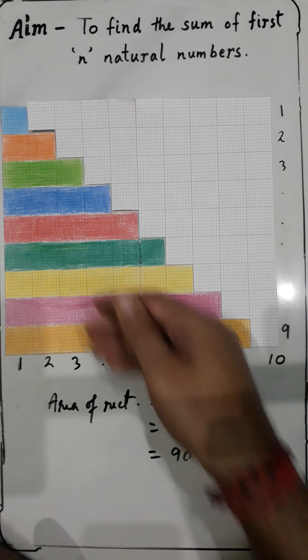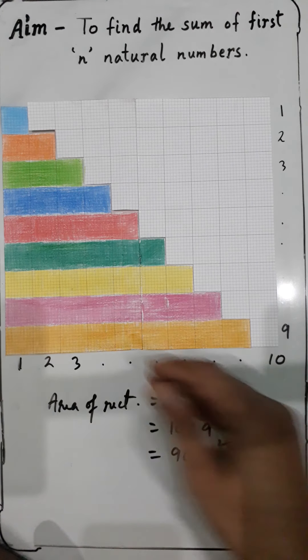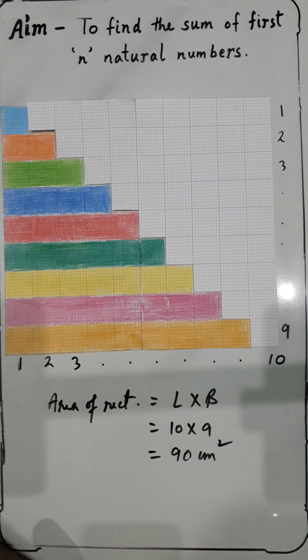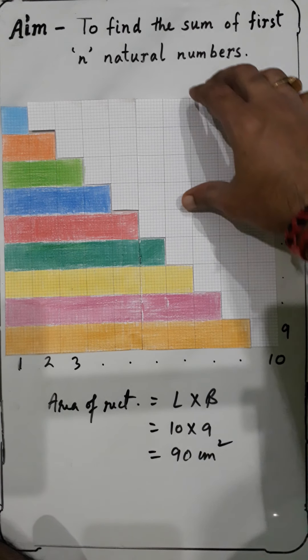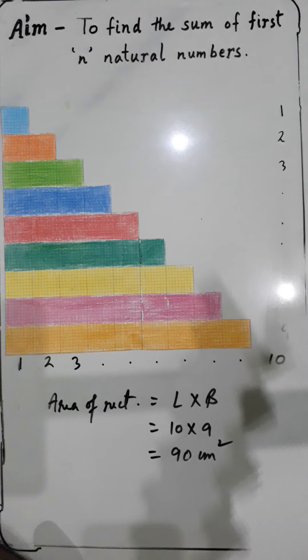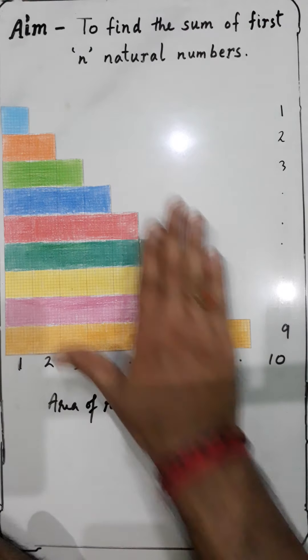...these consecutive natural numbers will be 45, because it is half of 90.